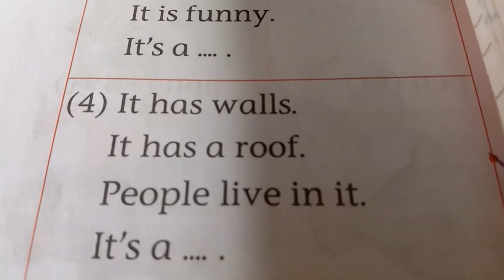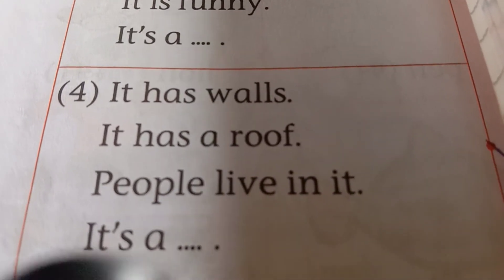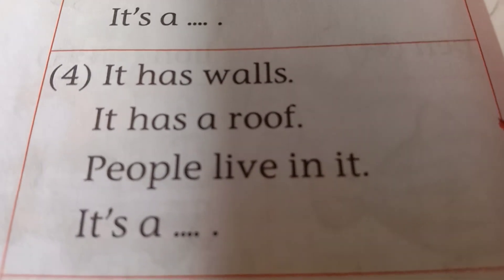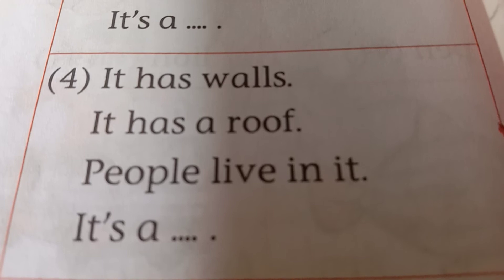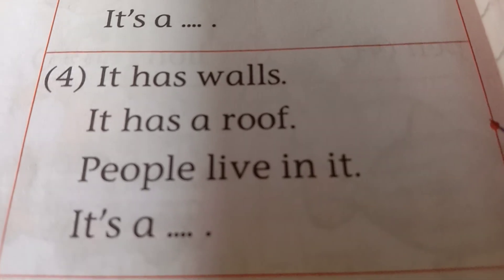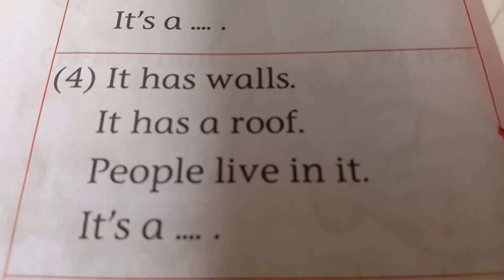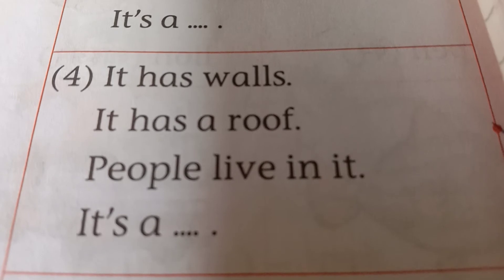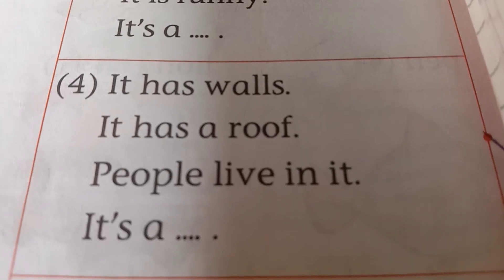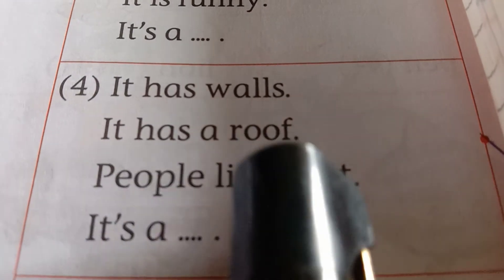Then: It has walls. It has a roof. People live in it. तेला भिंती असतात, तेला छत असते, लोक त्याच्यामध्ये राहतात. आपण कुठे राहतो? आपल्या घराला काय असते? भिंती असतात? छत असते? आपण घरात राहतो म्हणजे काय? It is a house.